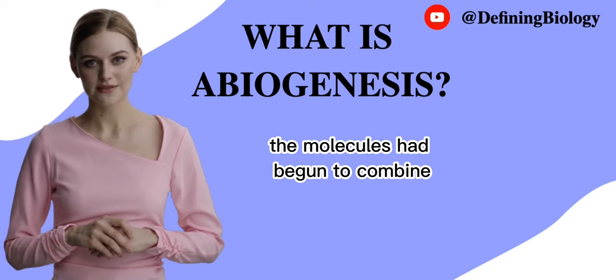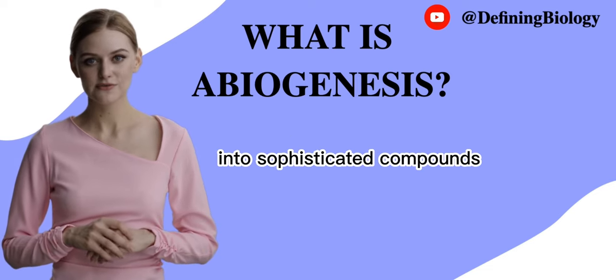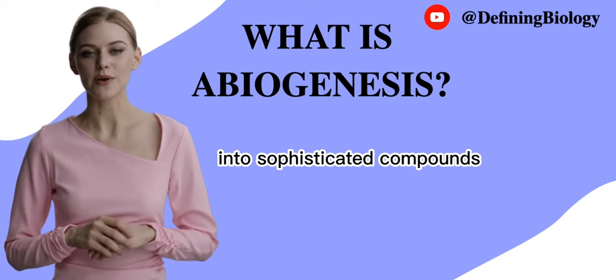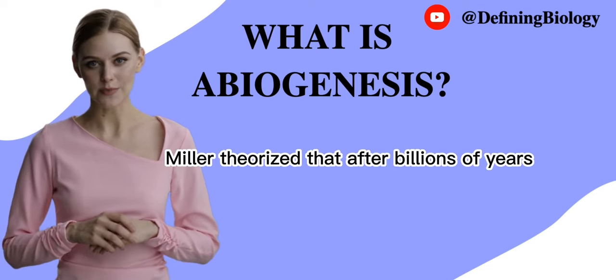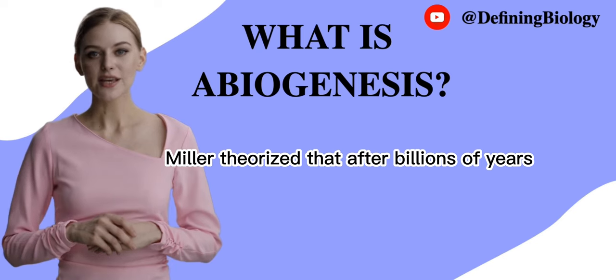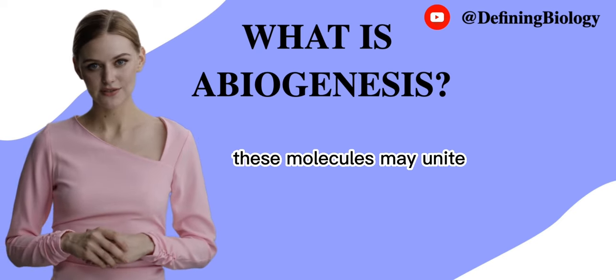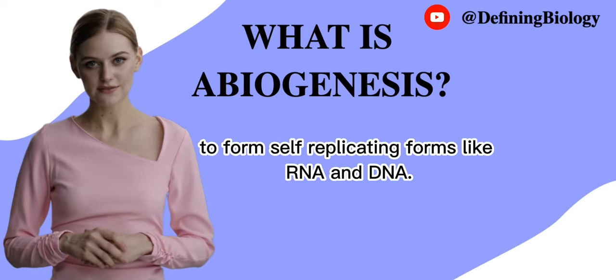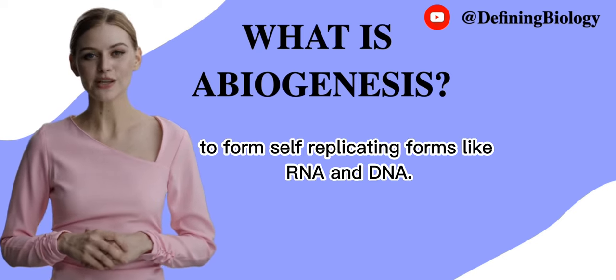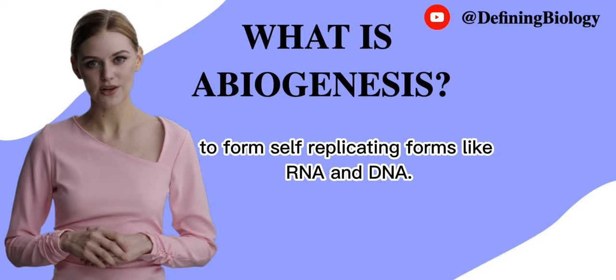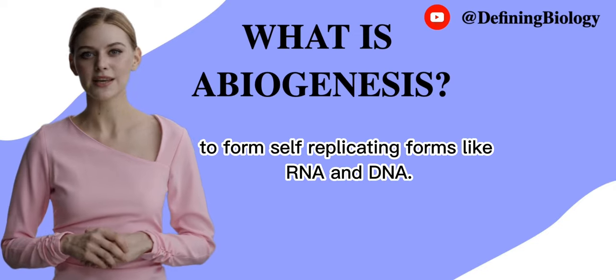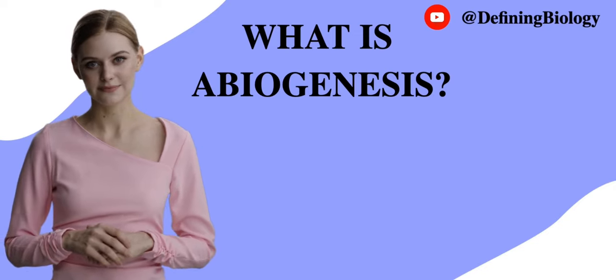The molecules had begun to combine into sophisticated compounds. Miller theorized that after billions of years, these molecules may unite to form self-replicating forms like RNA and DNA.